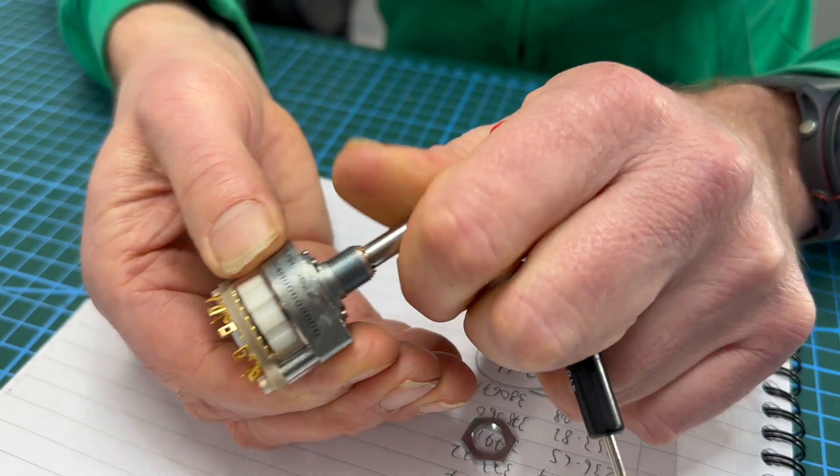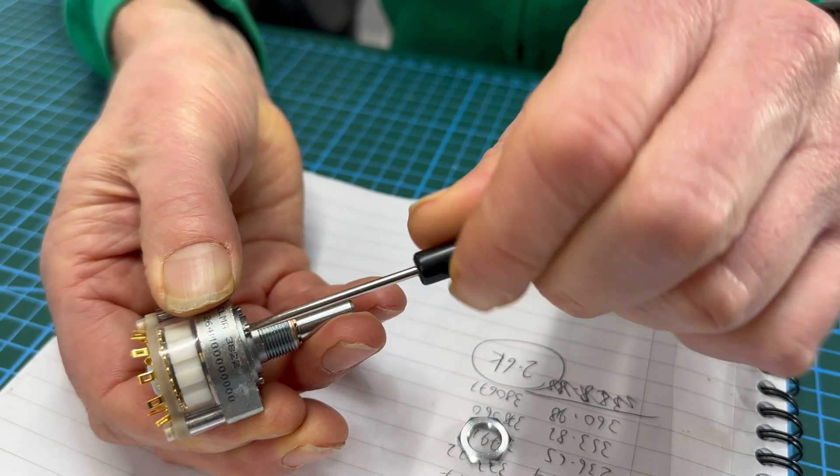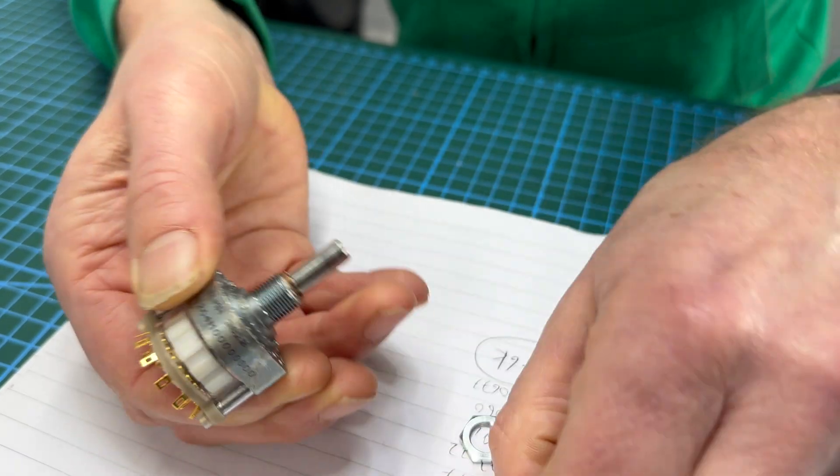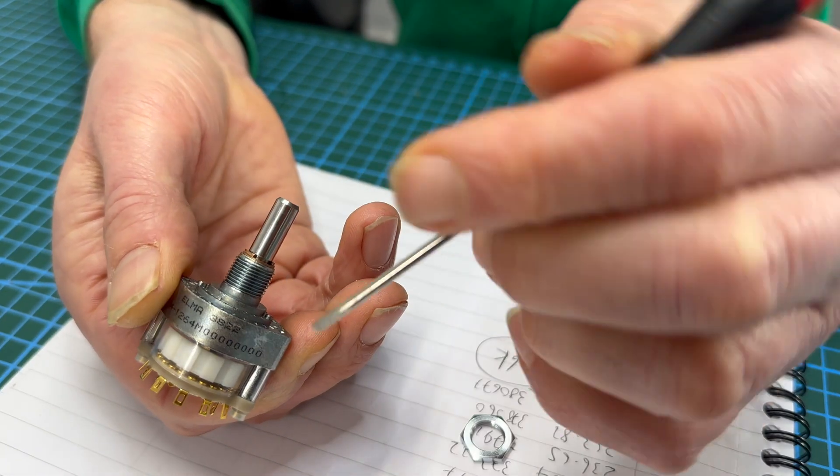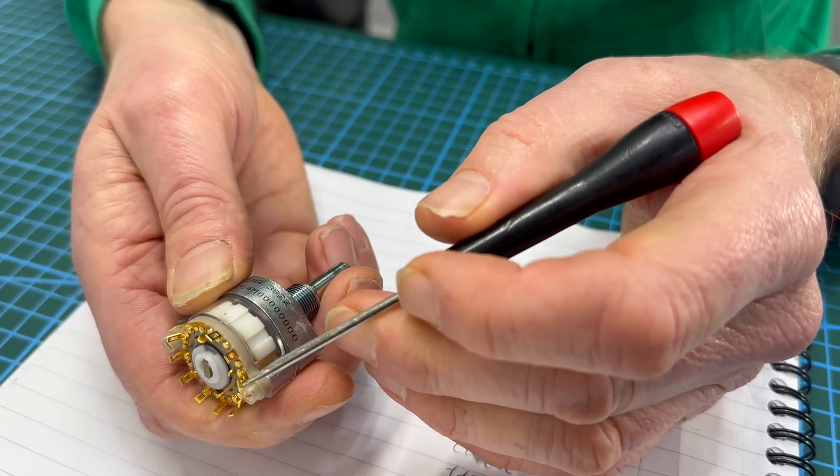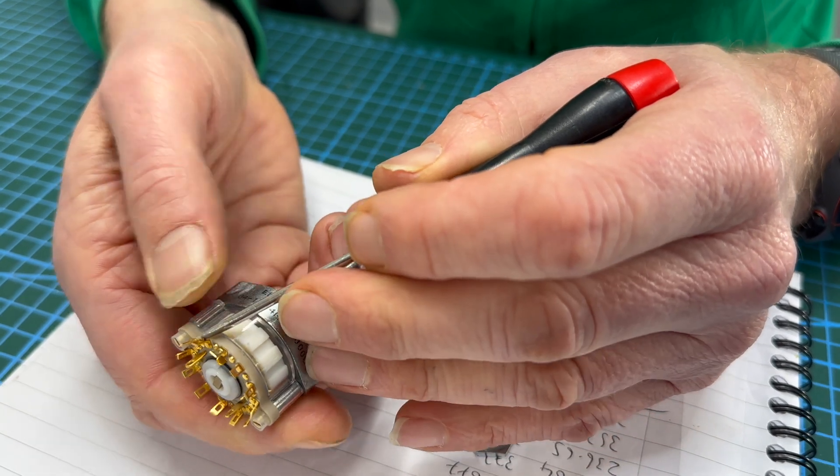Cool, take it back. So say if you want to make it a two pole five way switch, let's take this out. Same kind of theory again, you want it to stop position one, position two, position three, position four, position five.